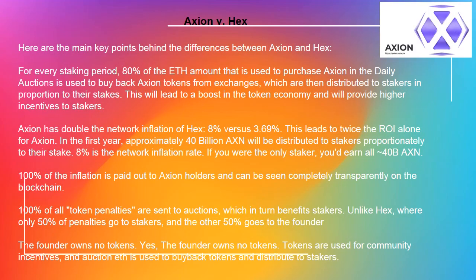Axion vs HEX — here are the main key differences. For every staking period, 80% of the ETH amount that is used to purchase Axion in the daily auctions is used to buy back Axion tokens from exchanges, which are then distributed to stakers in proportion to their stakes. This will lead to a boost in the token economy and will provide higher incentives to stakers.